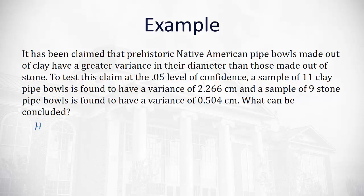As always, with our null hypothesis, we're looking for equality. We're claiming that the variance of the clay, so I'll use a subscript of c, is equal to the variance of those made out of stone, sigma squared sub s. The alternative hypothesis is what we're trying to prove, that the clay is greater than the stone. So the variance of the clay is greater than the variance of the stone. If we were to draw a picture of this situation, we're looking at the right tail of this test.